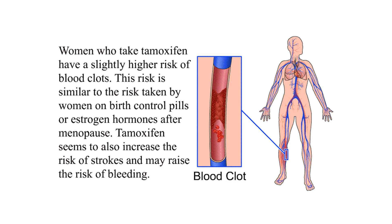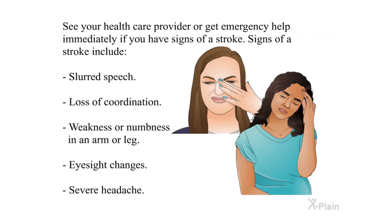Women who take tamoxifen have a slightly higher risk of blood clots. This risk is similar to the risk taken by women on birth control pills or estrogen hormones after menopause. Tamoxifen also appears to increase the risk of strokes and may raise the risk of bleeding. See your health care provider or get emergency help immediately if you have signs of a stroke, which include slurred speech, loss of coordination, weakness or numbness in an arm or leg, eyesight changes, or severe headache.